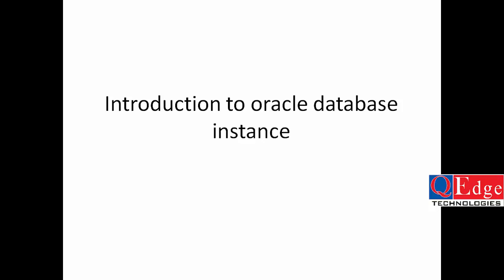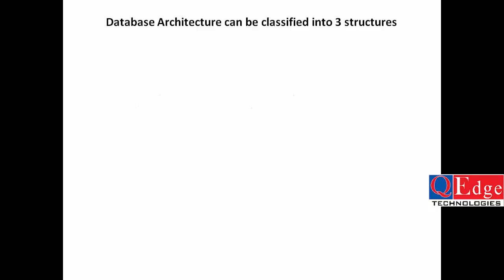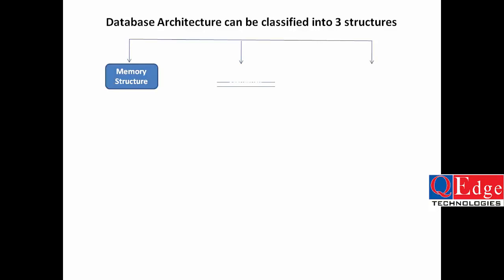Let me give an introduction to the Oracle database instance. Before understanding the instance concept, let me introduce the architecture of Oracle database. Oracle database architecture can be classified into three structures: memory structure, process structure, and storage structure. In the memory structure, you have the System Global Area (SGA) — also known as Shared Global Area — and the Program Global Area (PGA).